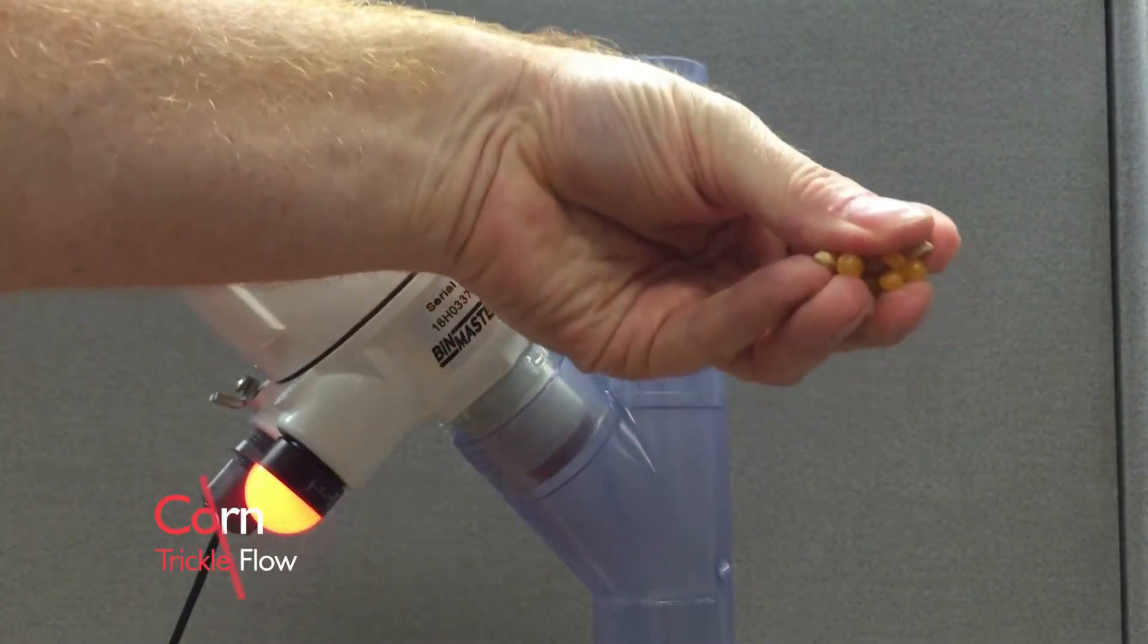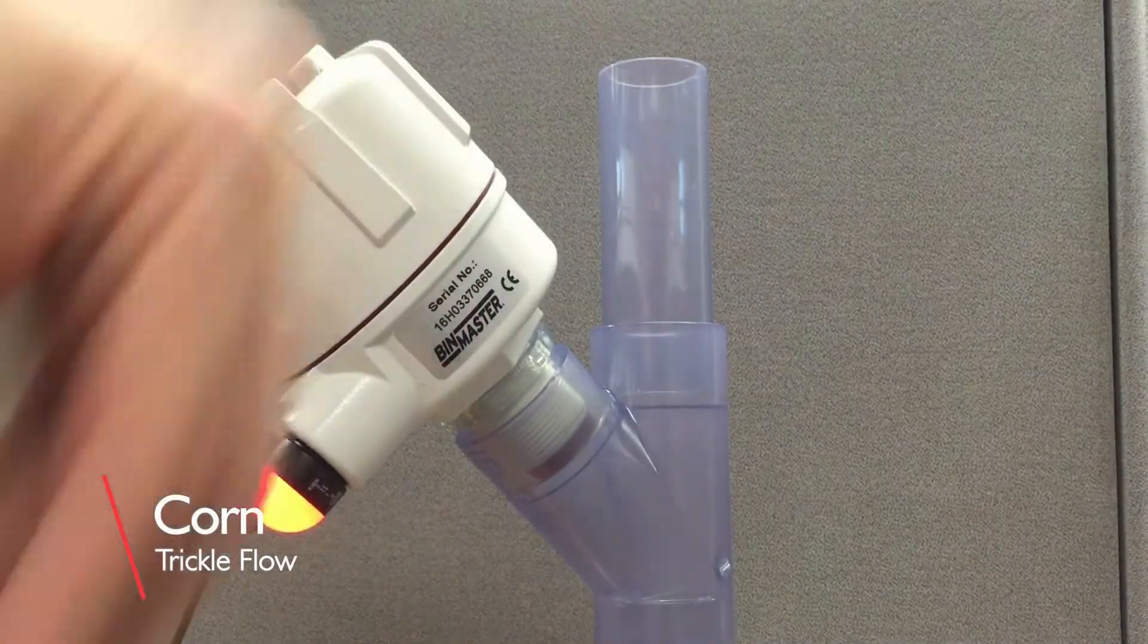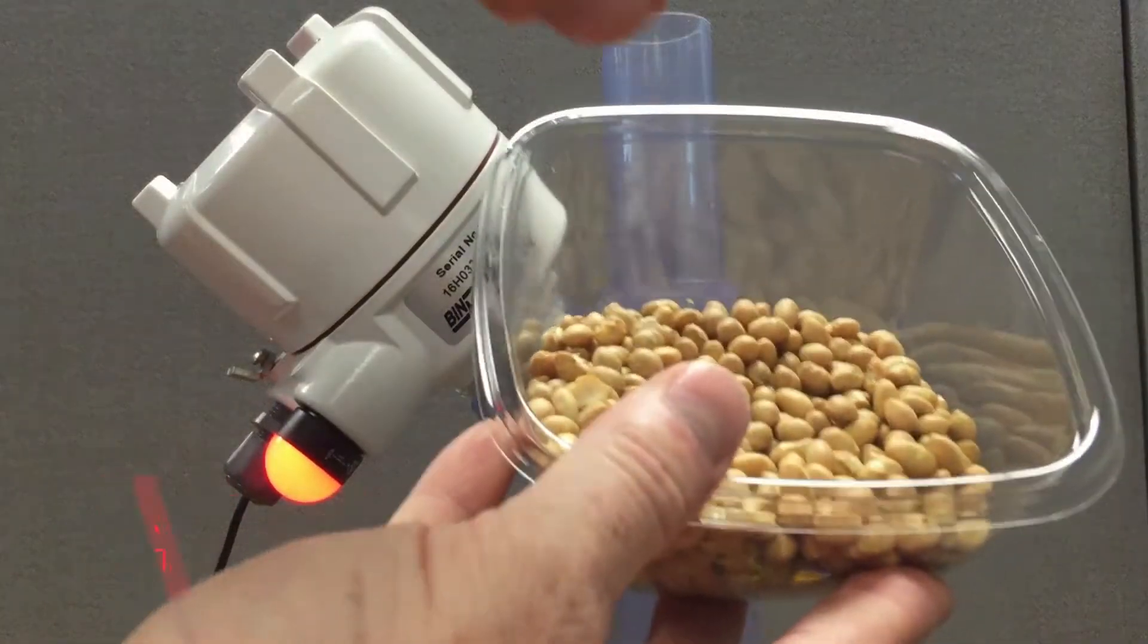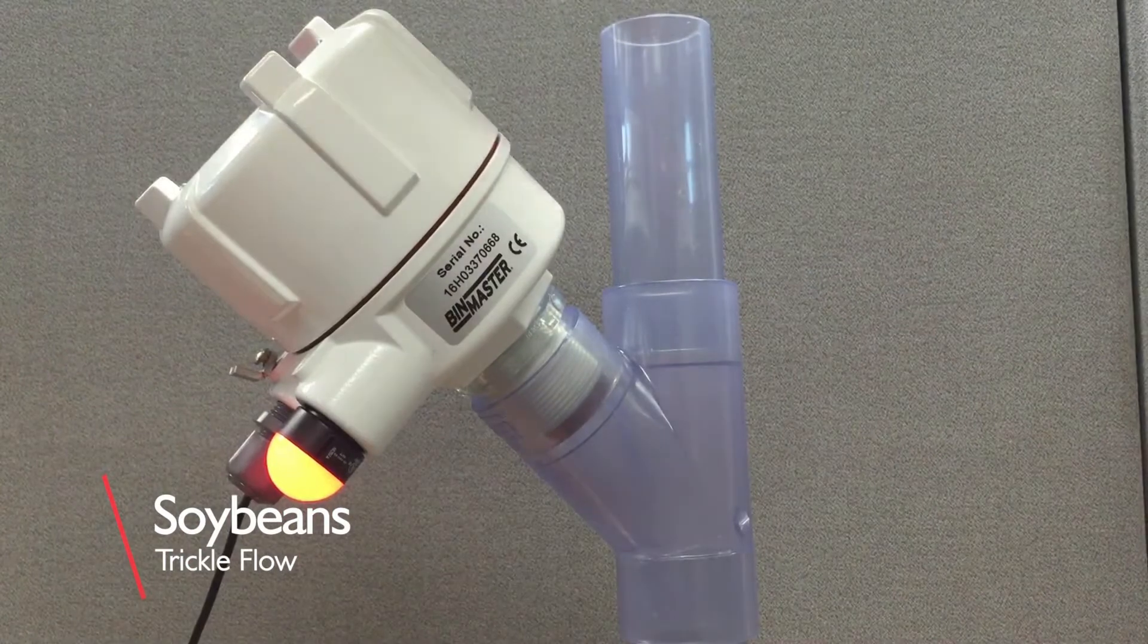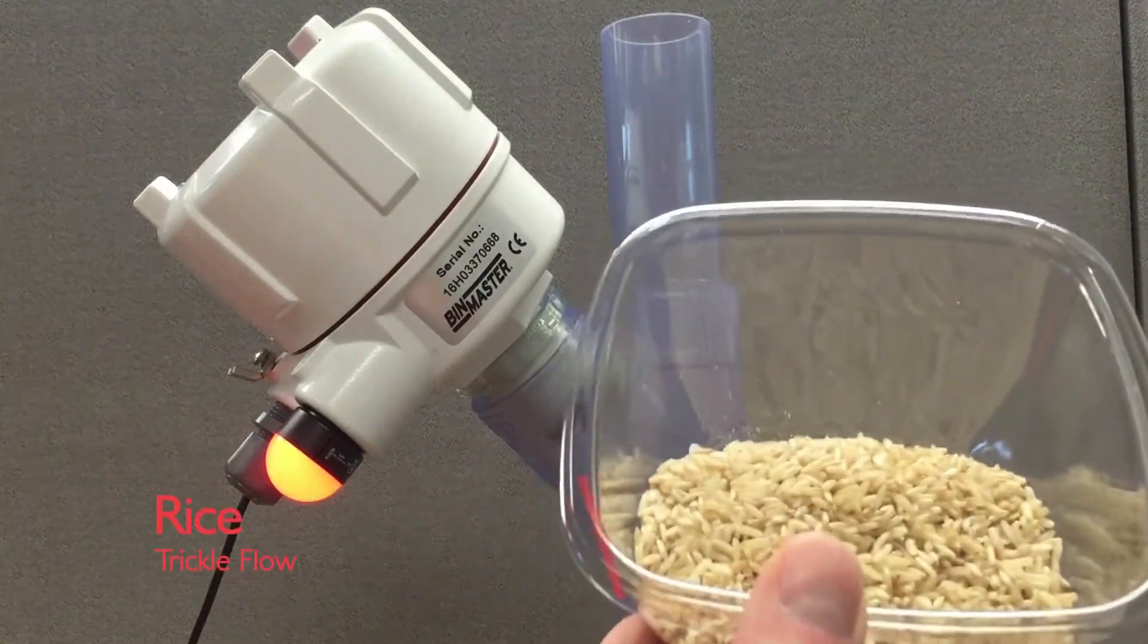In this video, we're going to put several different materials through the pipe, simulating flow for your application. You're going to see that just very small amounts, trickle flow as we're calling it, will set the unit off.